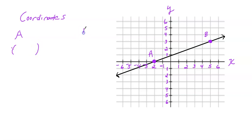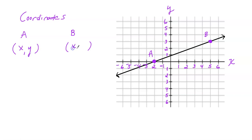Pause the video and find the coordinates of point A and point B. Welcome back. Remember it's always x, y. The coordinate of point A — it falls exactly on the x-axis. I move left two units in the horizontal direction, so x is negative two. How many units do I move vertically to get to this point? I don't have to move at all — it falls right on the x-axis, so my y value is zero. The coordinate of A is negative two, zero.